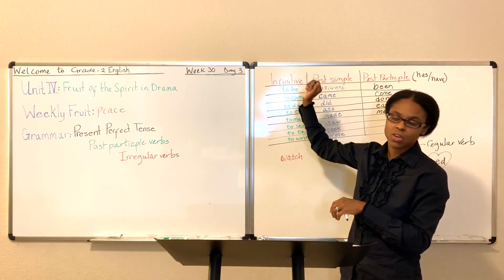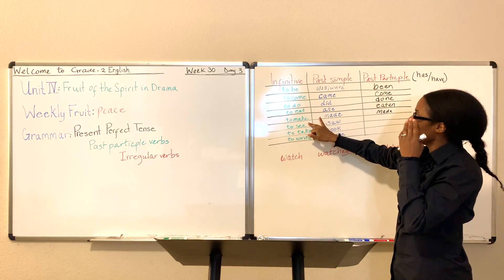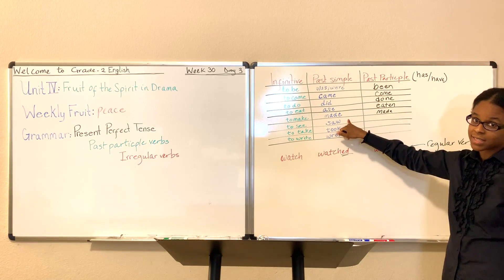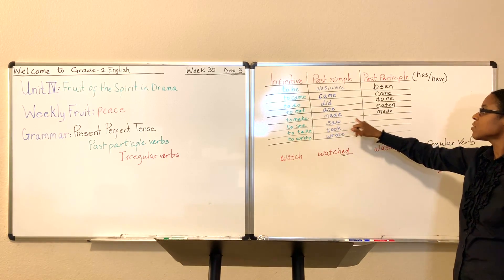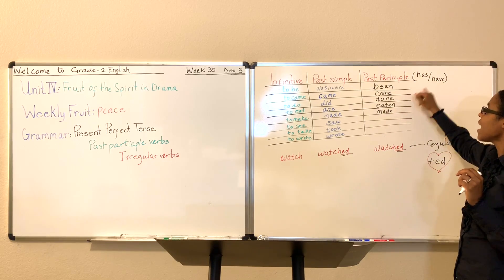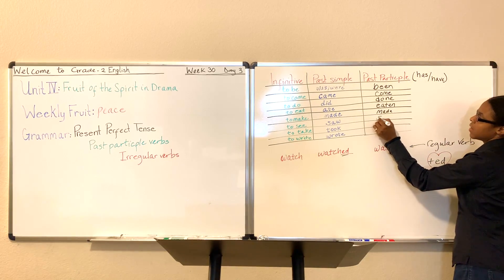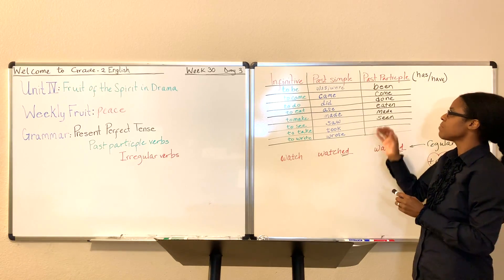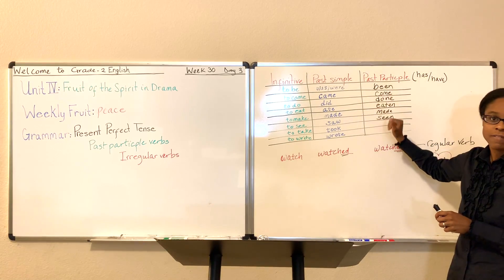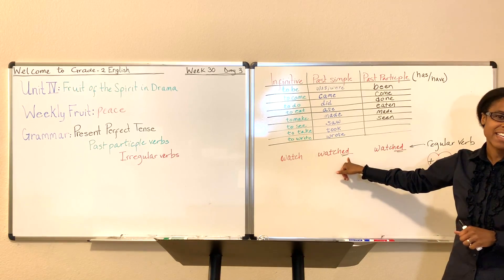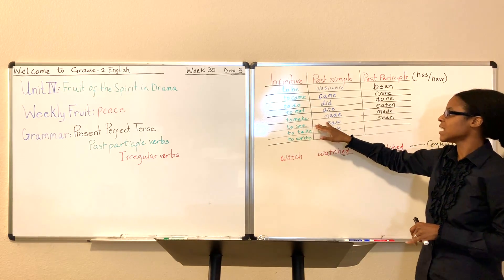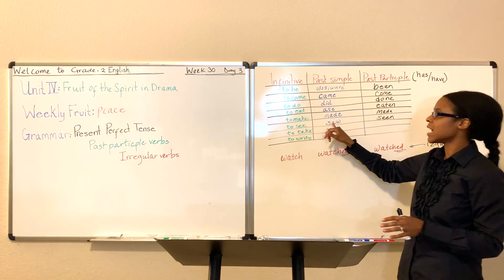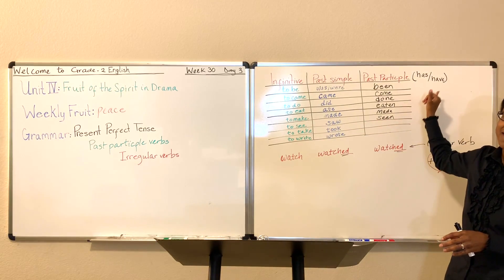Infinitive is also called present simple. I see the birds. I saw. Past simple is past. I saw the birds. I have seen. These are called irregular verbs because to make them past simple or past participle, you can't just add E-D. I can't just say, I see, I seed, and I seed. That would not be correct. I see. I saw. I have seen.